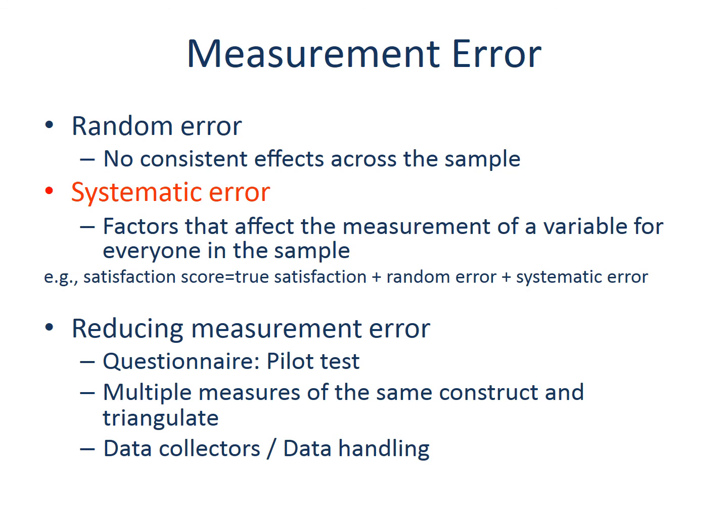To reduce measurement error, you can employ several tactics. When you use a questionnaire, you may want to pilot it with a group of people from your sample or similar to your sample, so you can detect any errors caused by the questions and response options. You can also employ multiple measures of the same construct and triangulate the responses to better approximate the concept you want to measure. If you have multiple people collecting and entering data, make sure everyone is on the same page regarding data collection and entry procedures. Among the various data collection methods, we will further discuss how to use questionnaires for data collection. See you in the next presentation.